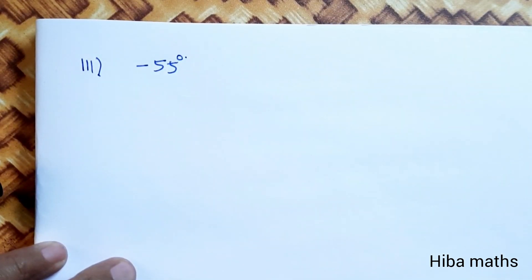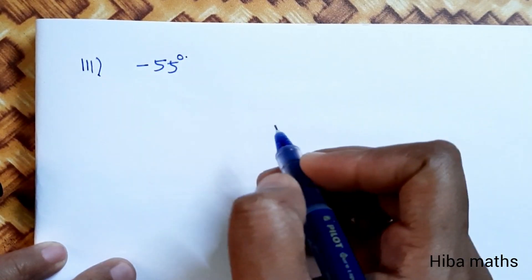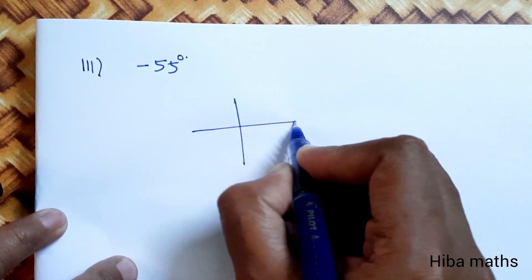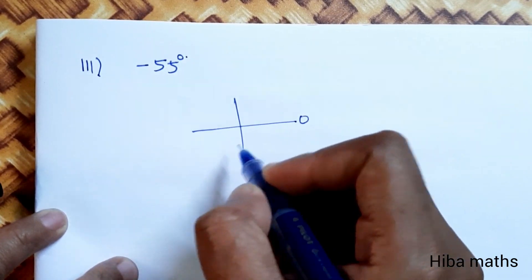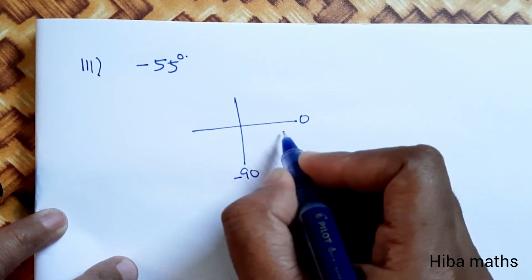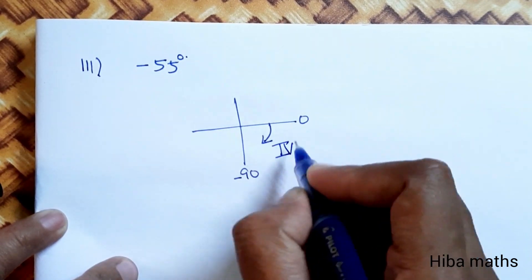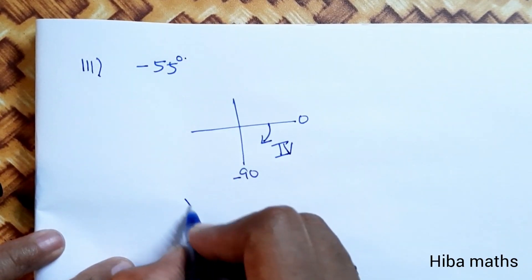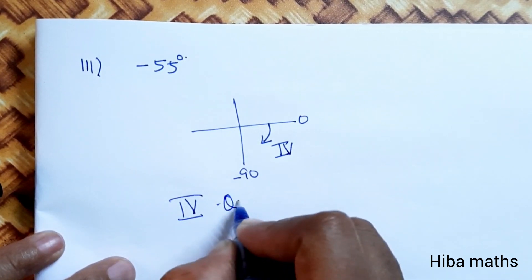Third subdivision: negative value, -55 degrees. Since it's negative, we go in reverse, clockwise. From 0° going backwards 55°, this falls in the fourth quadrant.